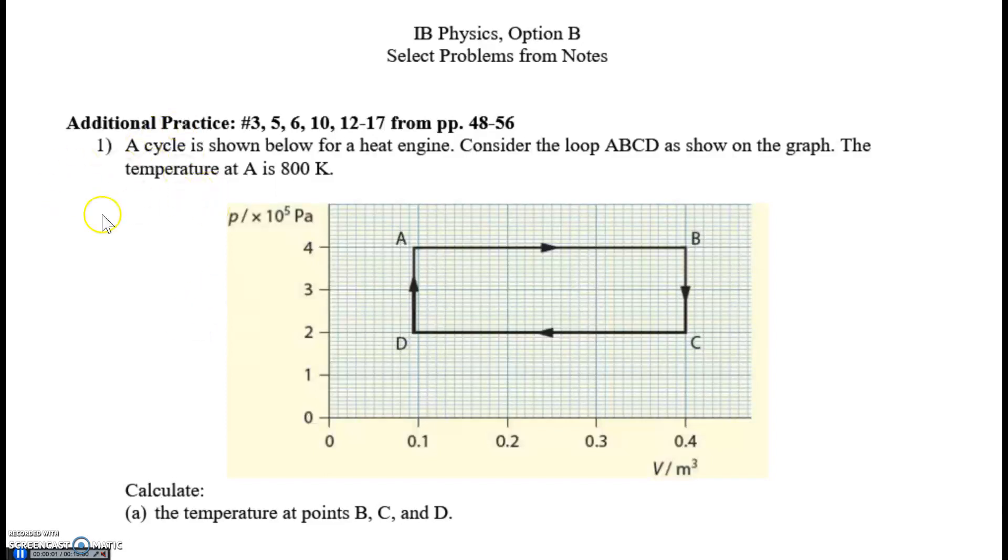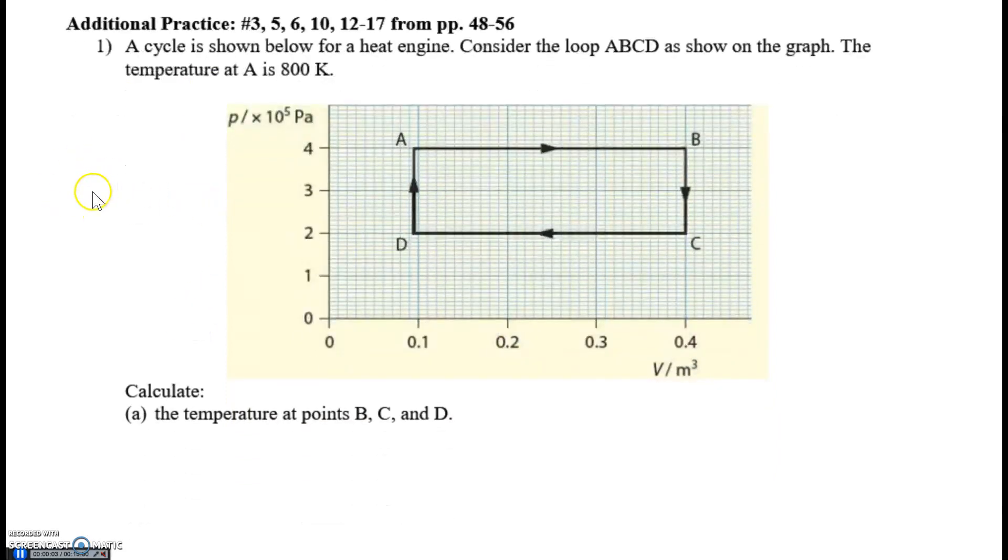We are going to solve some problems from our study guide, starting with number one. We've got this cycle for a heat engine, and they tell us that the temperature at A is 800K. Before I get started, I'm going to write down ordered pairs for each of these points.